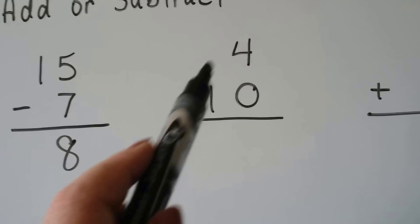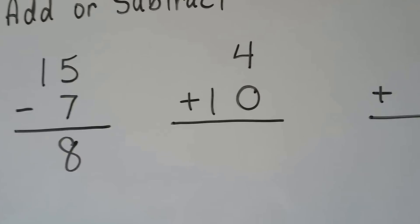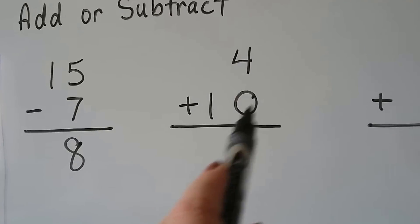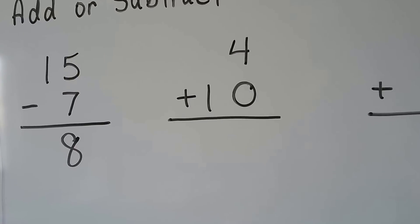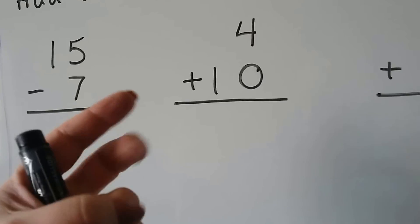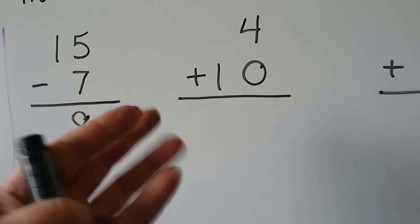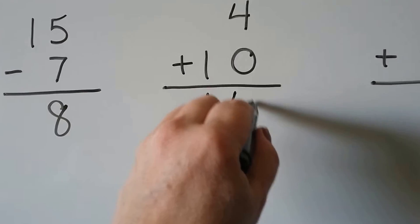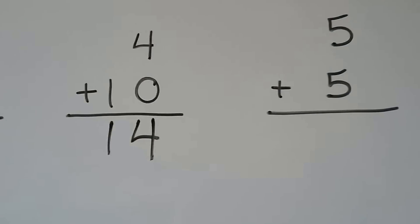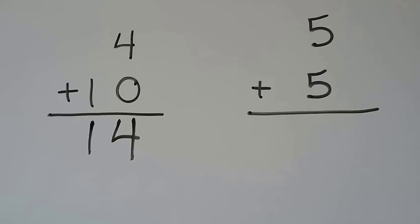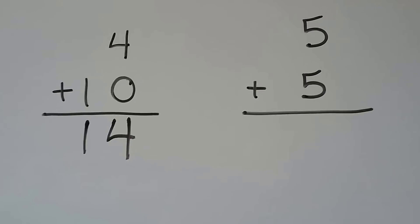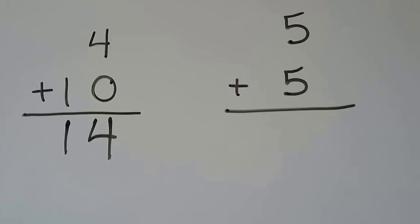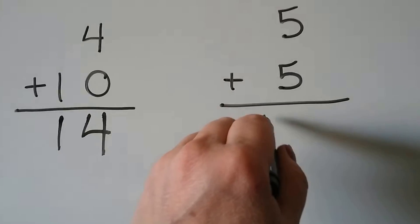Now we have 4 plus 10. We start with the larger addend, 10, and count on 4: 10, 11, 12, 13, 14. For 5 plus 5 — that's doubles. Do you remember 5 plus 5? That's 10.